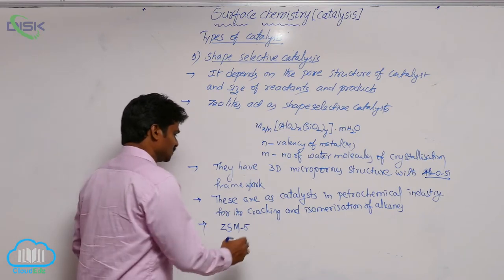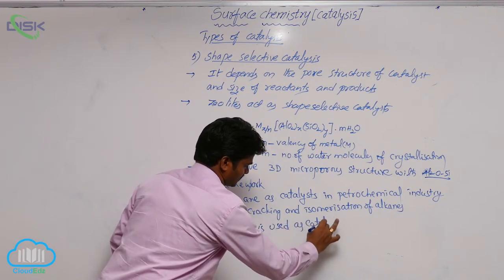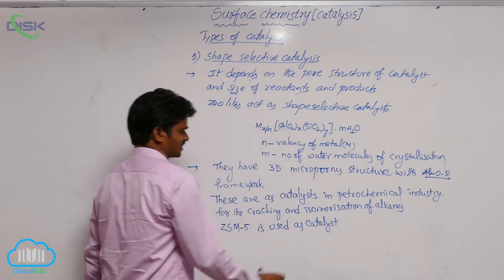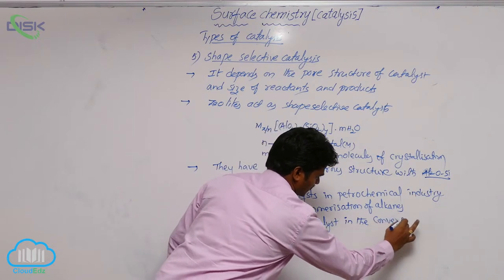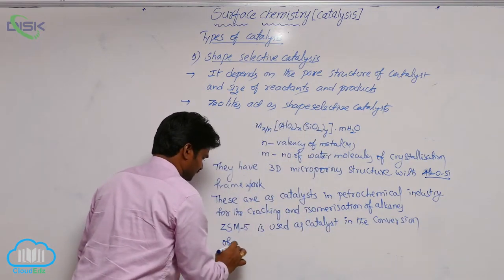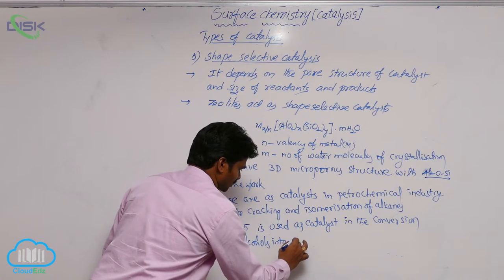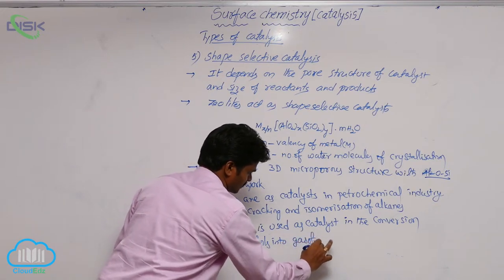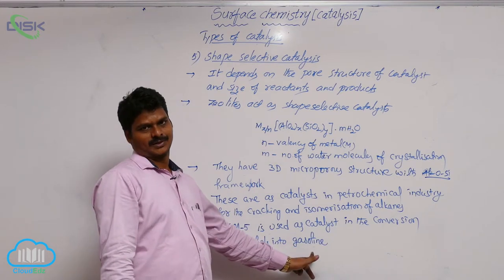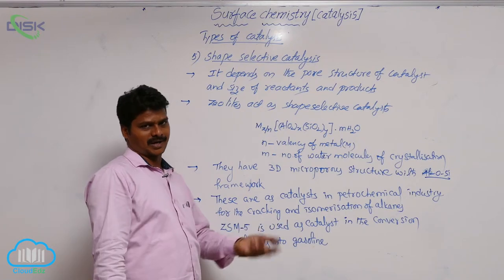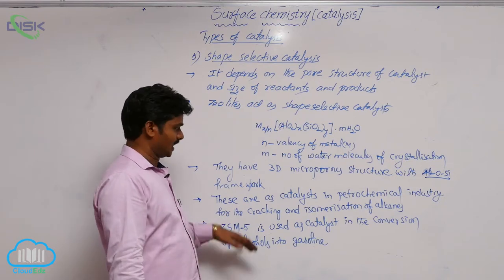ZSM-5 is used as a catalyst in the conversion of alcohols into synthetic gasoline — that means synthetic petrol. Petrol is a mixture of hydrocarbons, so ZSM-5 is used in the preparation of synthetic petrol from alcohol.